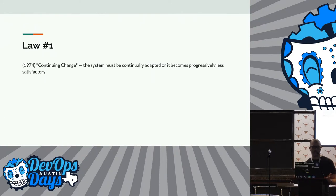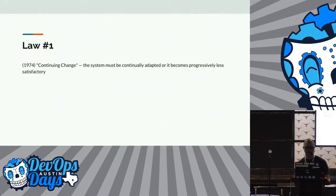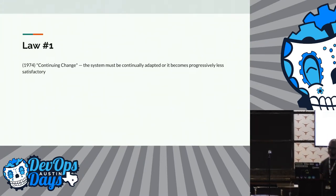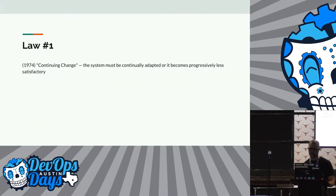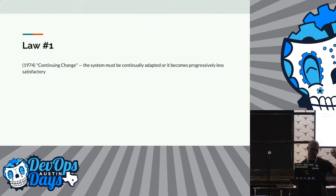Law number one is essentially continuing change. The process - the way that the business operates - should always be up for debate. All these laws actually pertain to building software, but if you treat building software the same way you view building your business, you'll understand they're very similar. You build this organization in an iterative process, rather than planning out all your teams upfront. Take your engineers, describe your requirements, and start building.